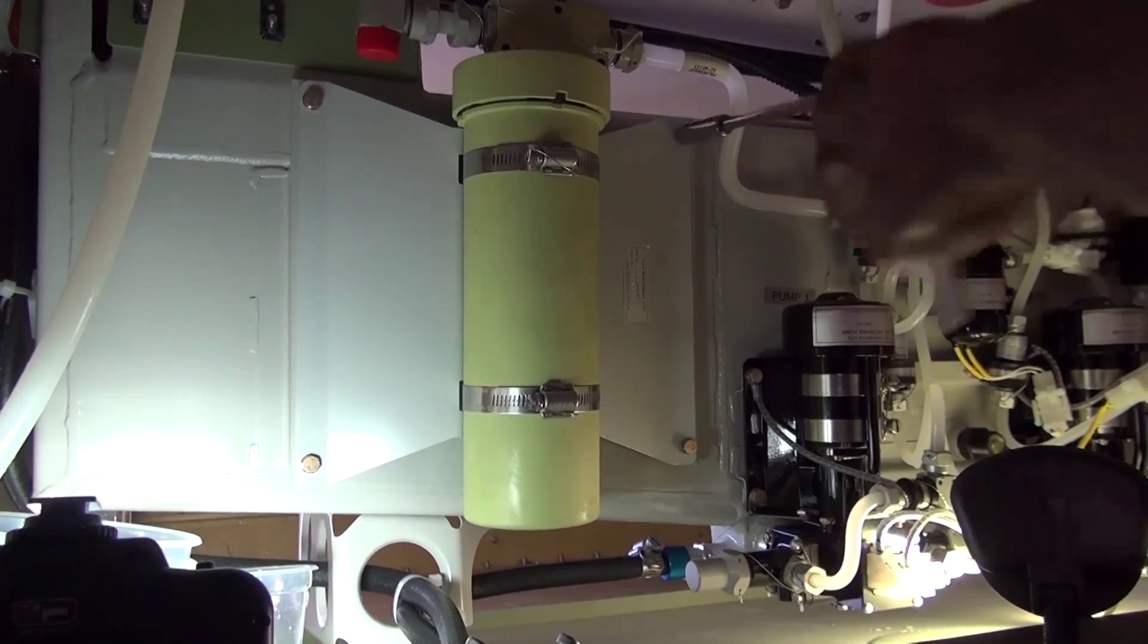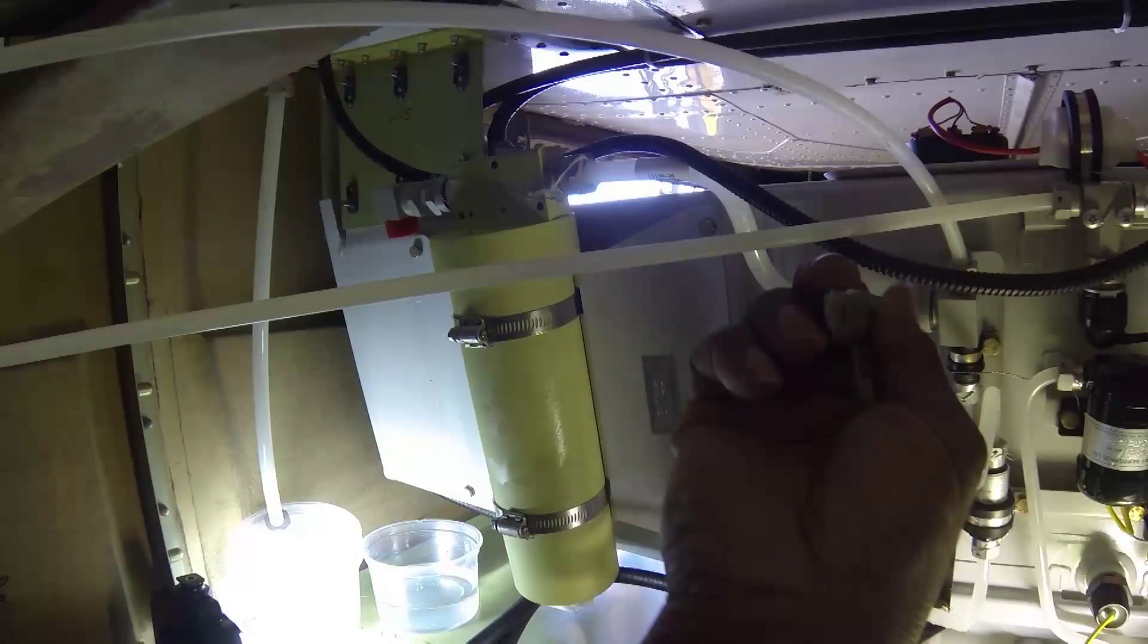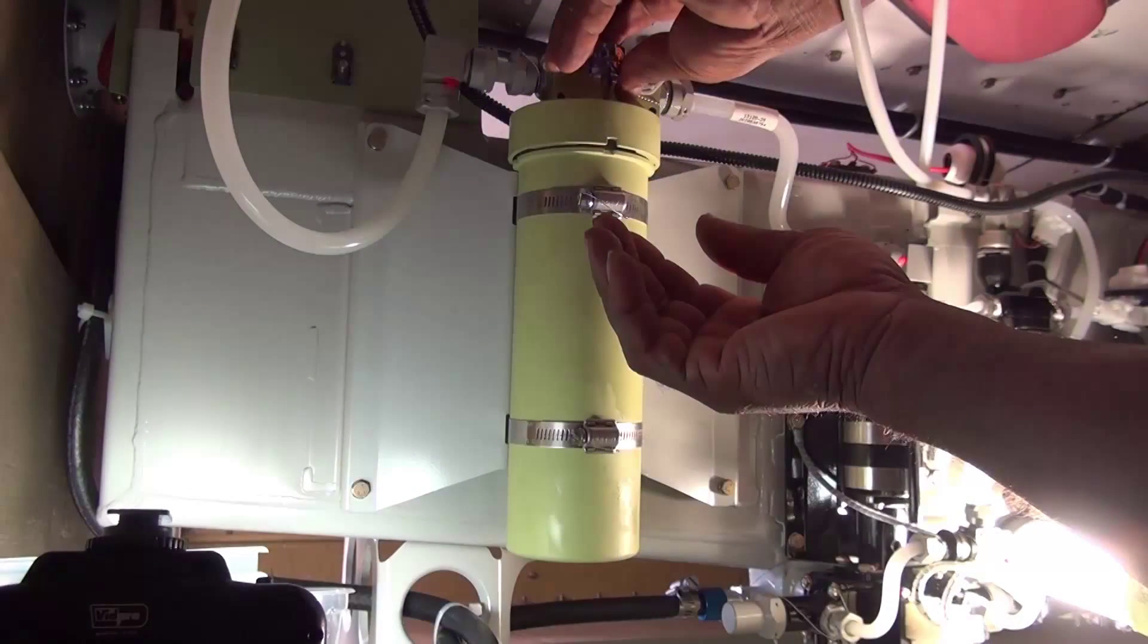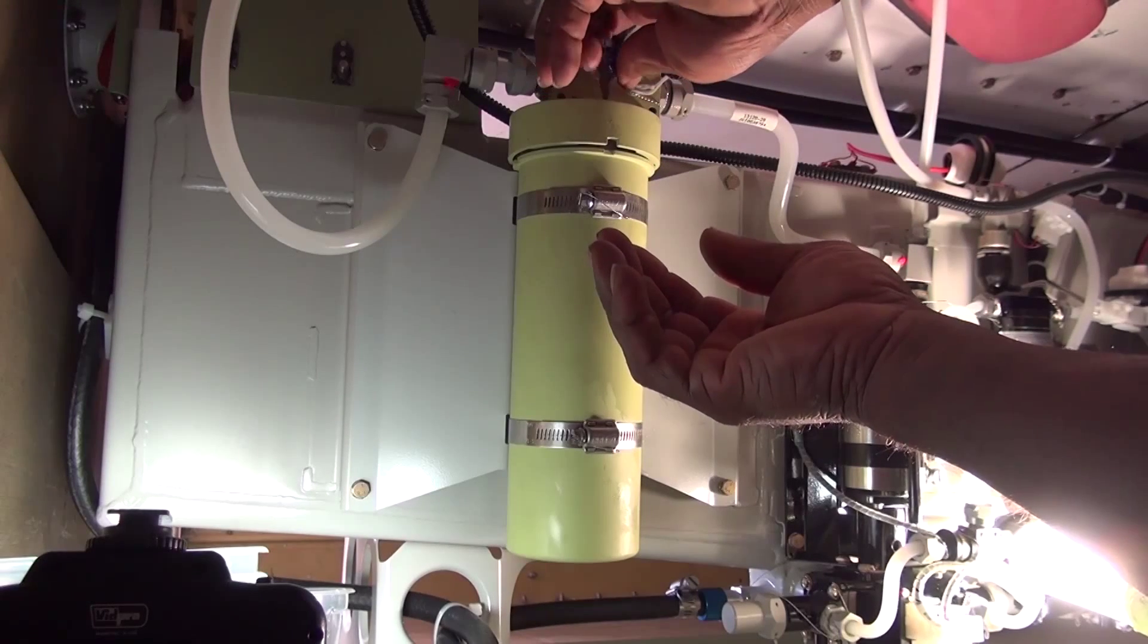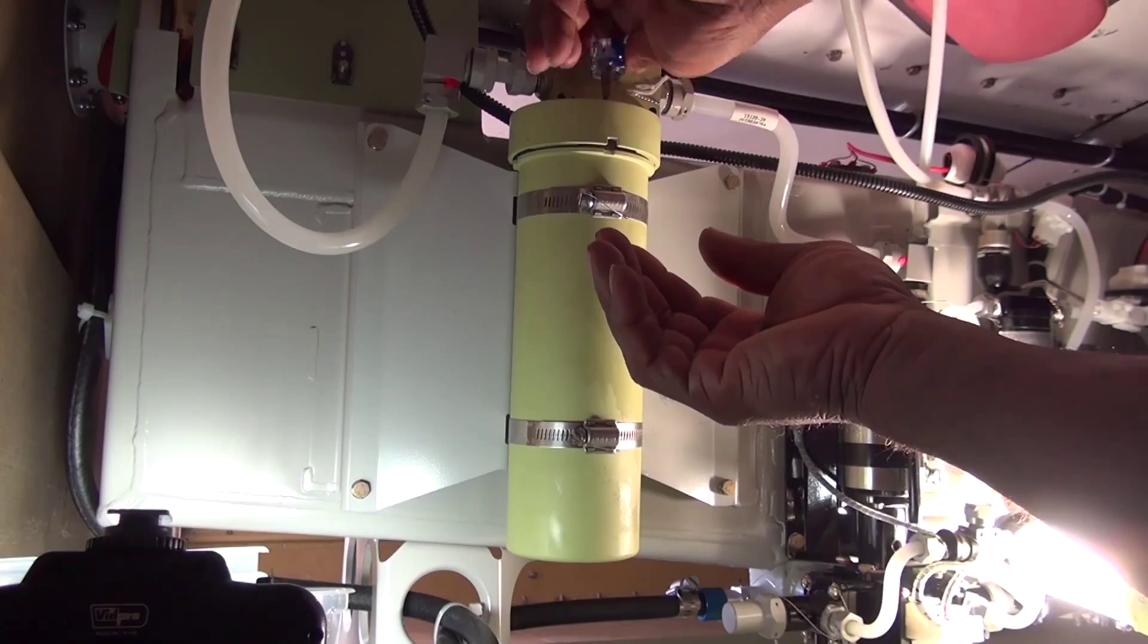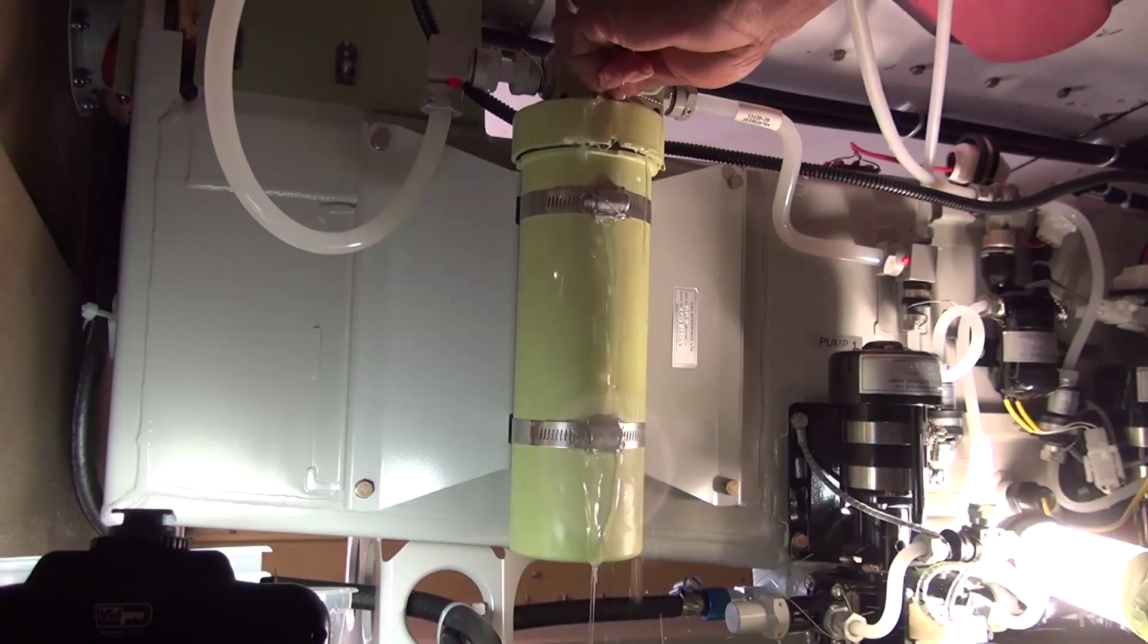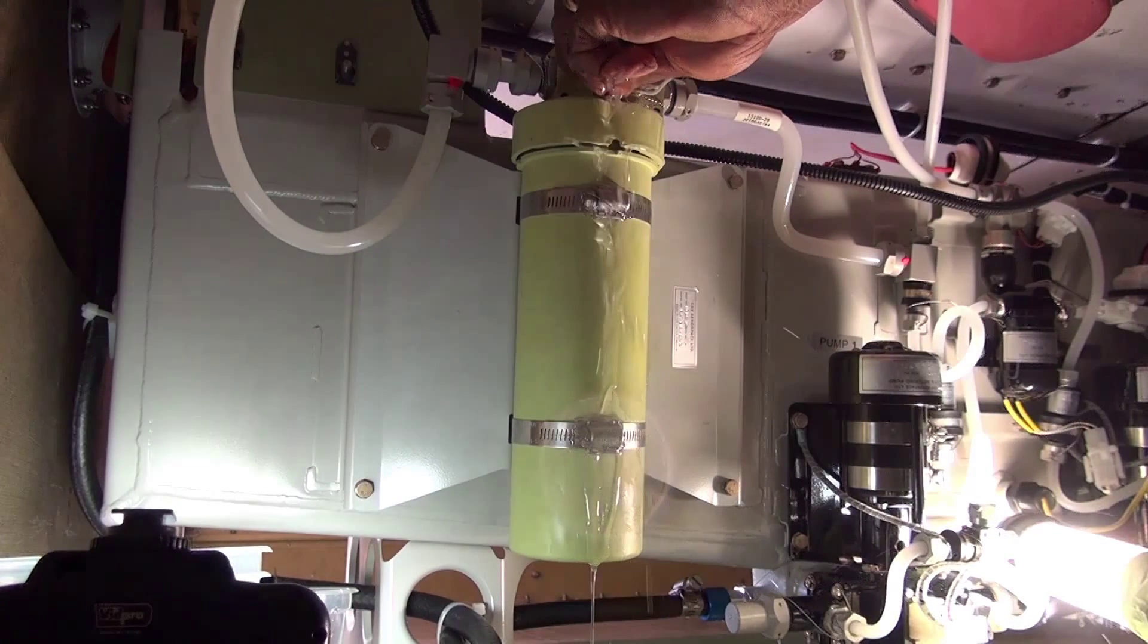Bleed the filter as follows. First, place a container below the filter. Then, remove the air bleed screw from the filter head. Next, operate the system in high mode until a steady stream of fluid comes out of the air bleed screw hole. Please note that a TKS fluid collection system must be in place before running the system in high mode.